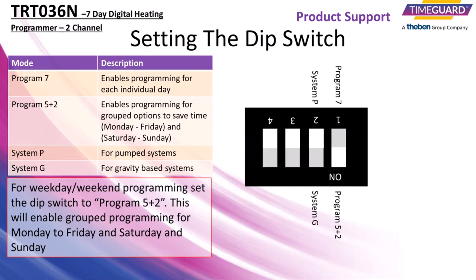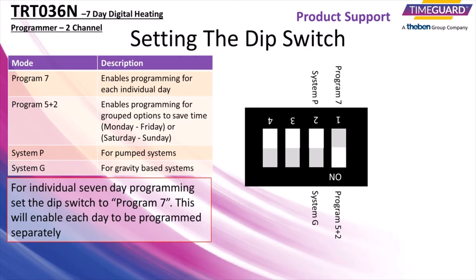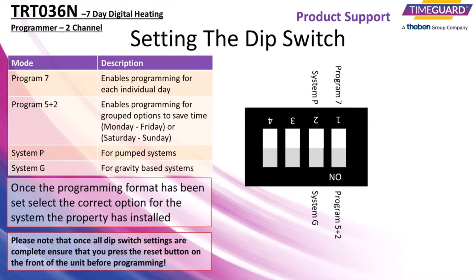This will enable grouped programming for Monday to Friday and Saturday and Sunday. For individual 7-day programming, set the DIP switch to program 7. This will enable each day to be programmed separately. Once the programming format has been set, select the correct option for the system the property has installed. System P is for pumped systems, and system G is for gravity-based systems.